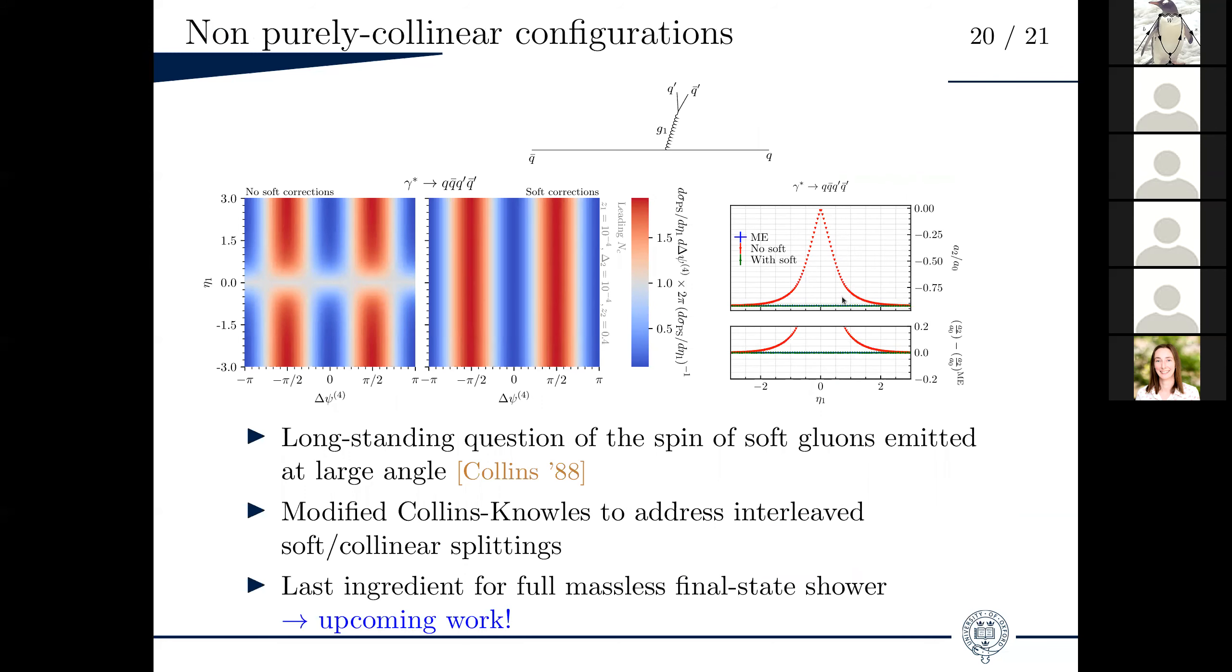That's associated with spin correlations that are not between two successive collinear splittings, but rather in configurations like this one where you have one soft gluon that is not necessarily collinear to the quarks, that then splits collinearly. Basically, our implementation of the Collins-Knowles algorithm cannot address this type of configurations straightforwardly. What we've been doing is basically correcting it with so called soft corrections so that you get the correct emission pattern and spin correlations also for this type of configurations. Actually, this was the last ingredient to claim full NLL accuracy in leading color for our massless final state showers. This is going to come out next week.